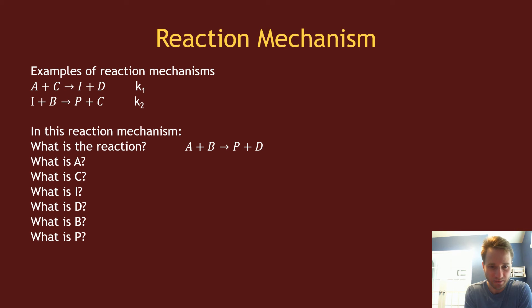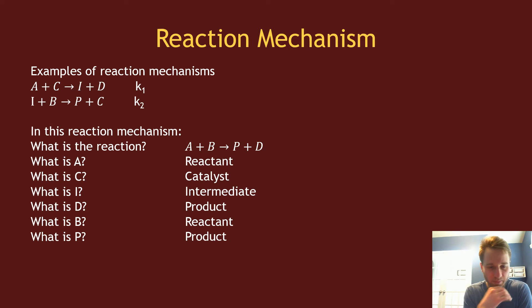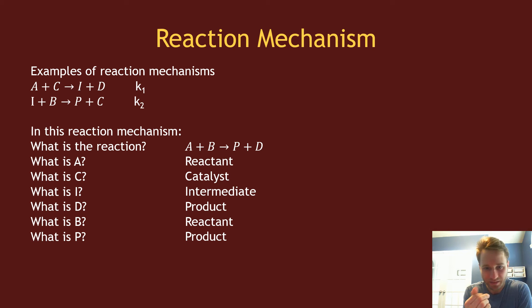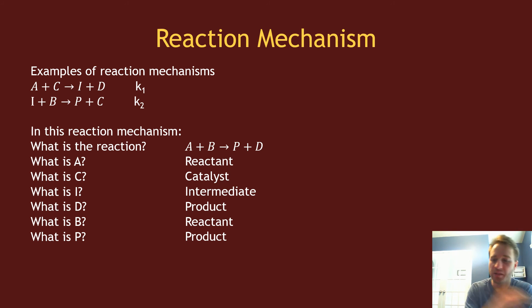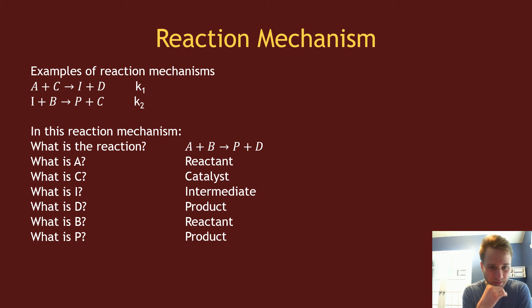In another similar two-step reaction mechanism, the overall reaction is A + B going to P + D. Here, A is the reactant, C is a catalyst, I is the intermediate, and P and D are products. The catalyst is similar to a reactant in that it doesn't appear in the overall chemical reaction — but unlike an intermediate, a catalyst is consumed first and then produced later. So C appears first as a reactant and then later as a product, while the intermediate first appears as a product and then later as a reactant.